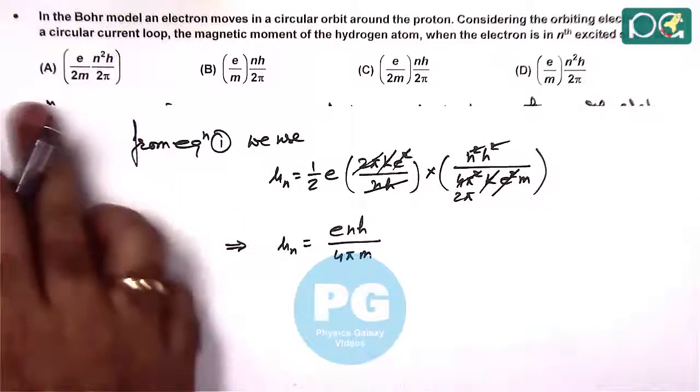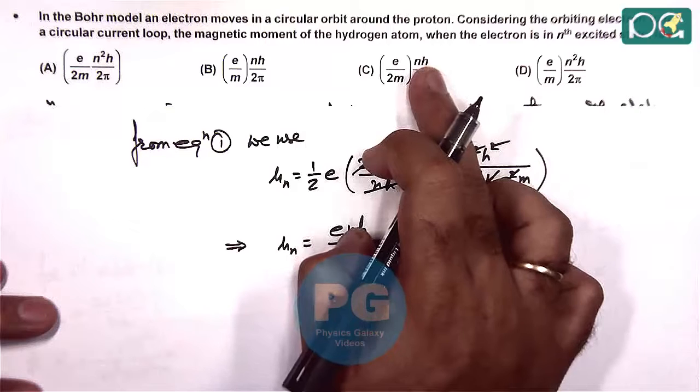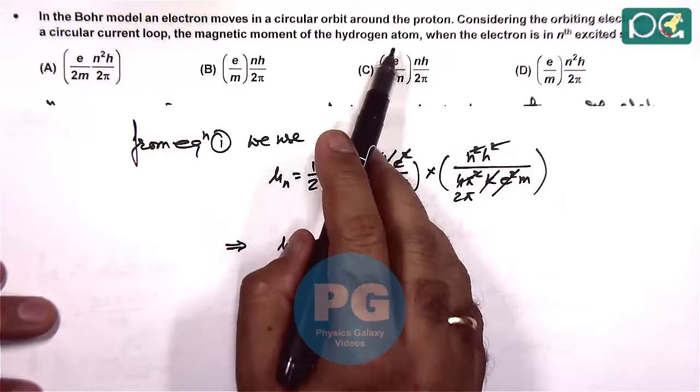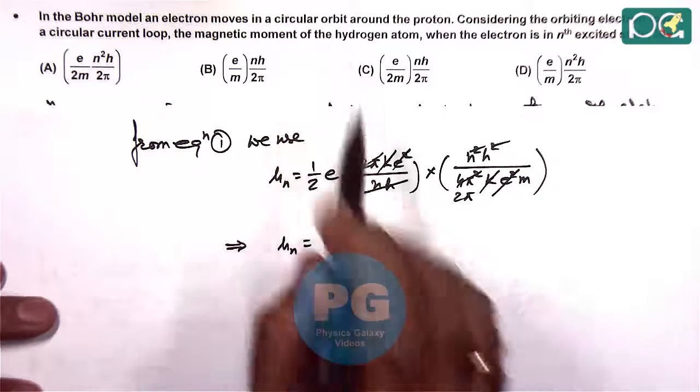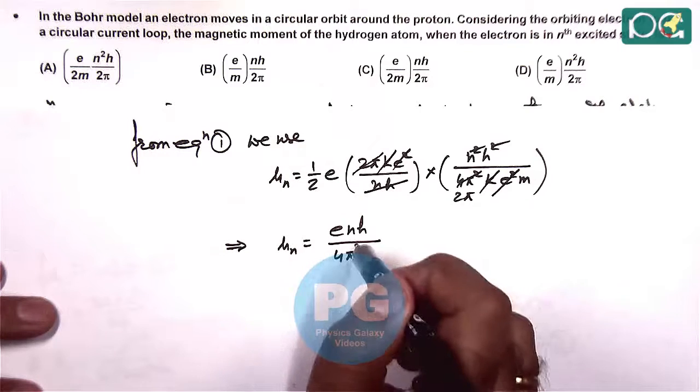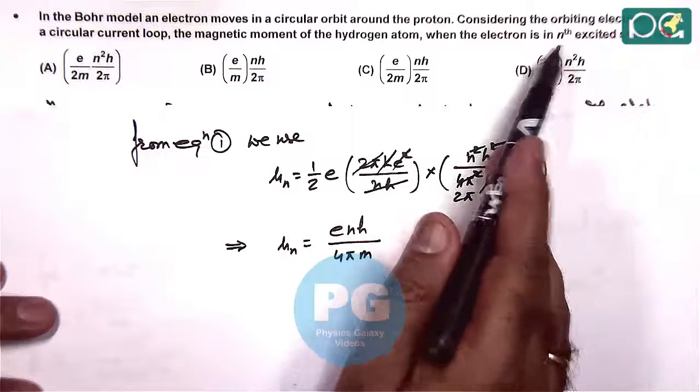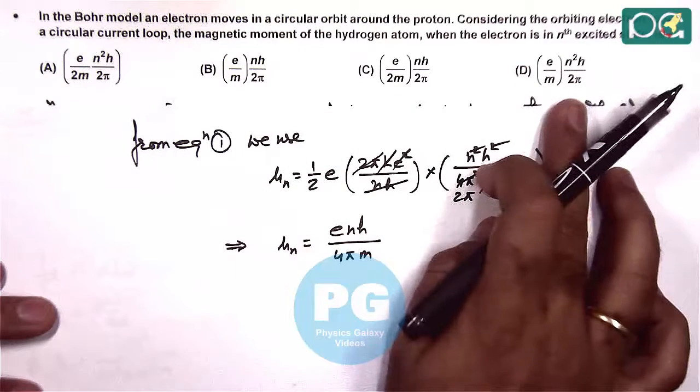This is what we are getting for magnetic moment, and carefully matching with the given option, it matches with option C. But here we can see in question it is not asking for the magnetic moment of nth energy level. It is talking about nth excited state, so energy level has to be n plus 1. But in that case, none of the given options will match.